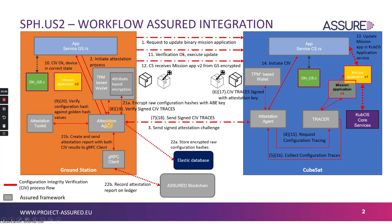After this process ends, the attestation agent pings the App Service confirming that the CIV was successful and that the device is in a correct state. The App Service is then ready to execute the update. The CubeSat receives mission application version 2 from the Ground Station encrypted, and the App Service implemented in the CubeSat updates the mission application to version 2 and registers the new application in the CubeSat application service.